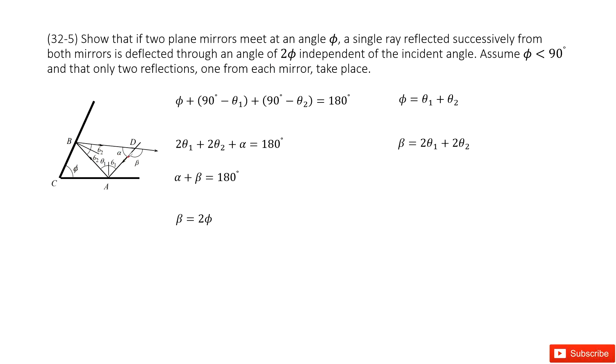We have two mirrors with angle phi. We need to prove that beta equals 2 phi.